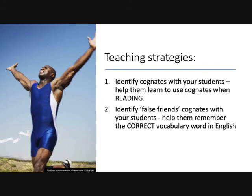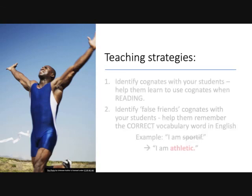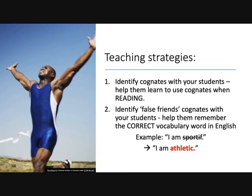You can also teach students to identify false friend cognates when they are writing or producing vocabulary. For example, this is a really common one overused by Francophone speakers in Quebec — they say 'I am sportif.' While we do have the word 'sport' in English, we never say 'I'm sportif' — it just sounds weird. We do, however, say 'I am athletic.' That's it.